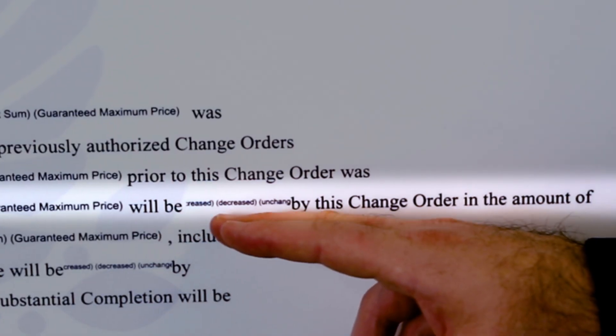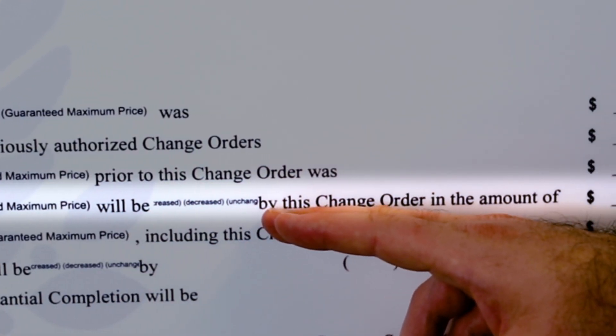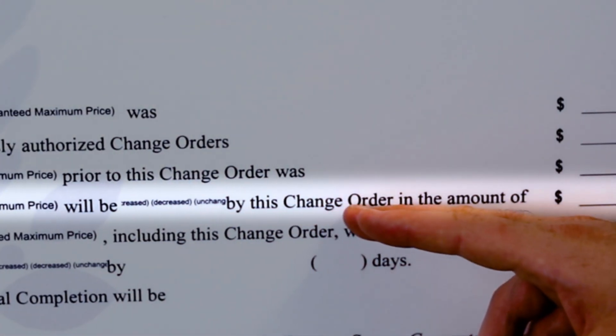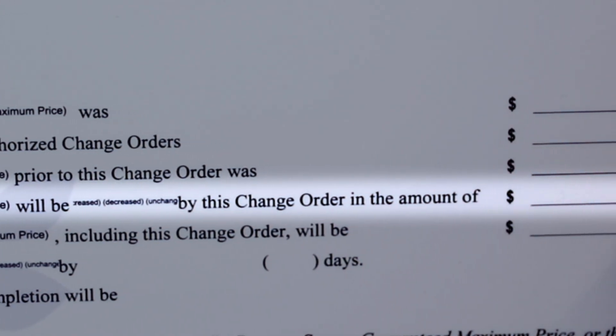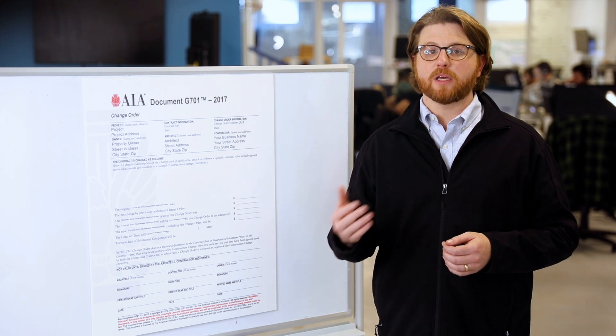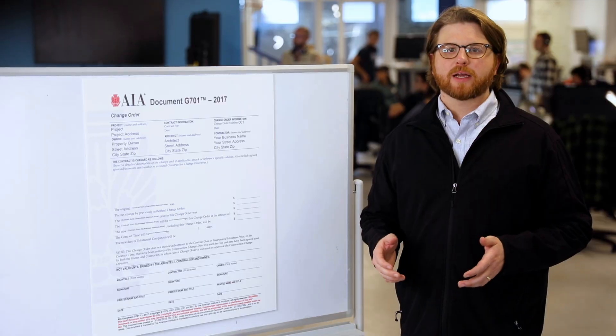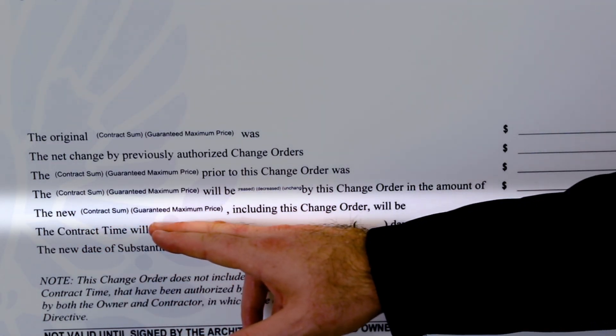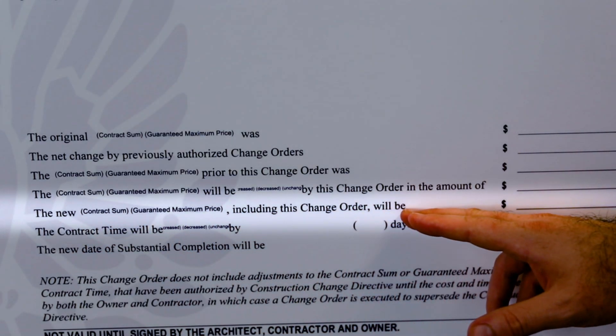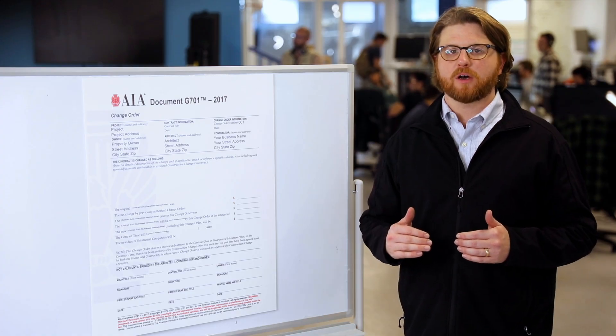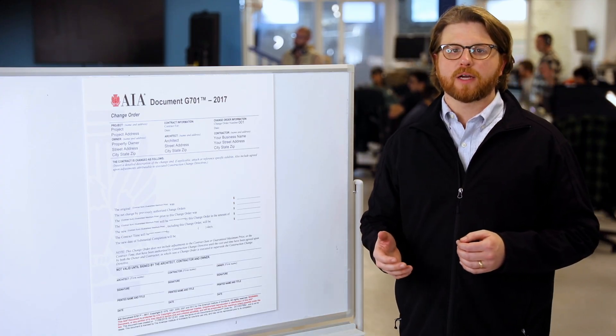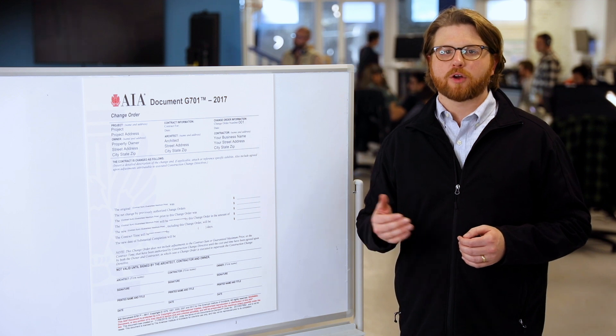The next line says the contract sum will be increased, decreased, or unchanged by this change order in the amount of blank. This is where the total cost of the current change order is written — it can be positive, negative, or unchanged, and should match the price the owner or architect agreed to. Next, the new contract sum including this change order: add or subtract the two previous lines. This is the new total contract sum after accounting for the current change order.